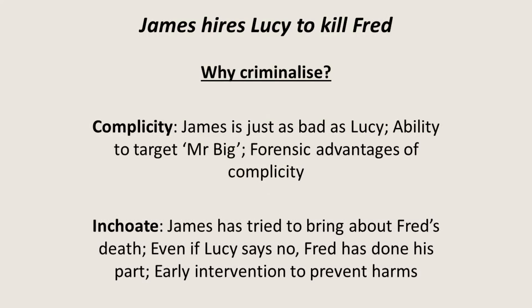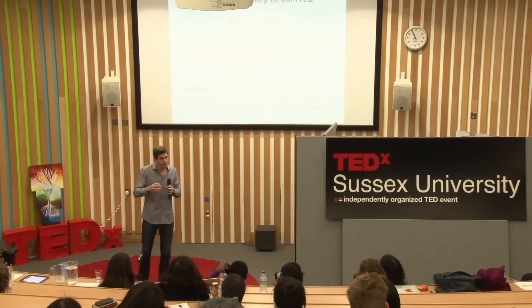Why do we want these to be criminalised? In relation to complicity, James hasn't done the killing, but there's every reason to say his culpability could be just as bad as Lucy's — or even worse. This kind of 'Mr. Big' scenario: in gang-type violence, someone might be orchestrating things without actively getting involved. Particularly with organised crime, individuals who don't actively take part can be more blameworthy than those who do. The law needs the ability to intervene, punish, and label them appropriately.